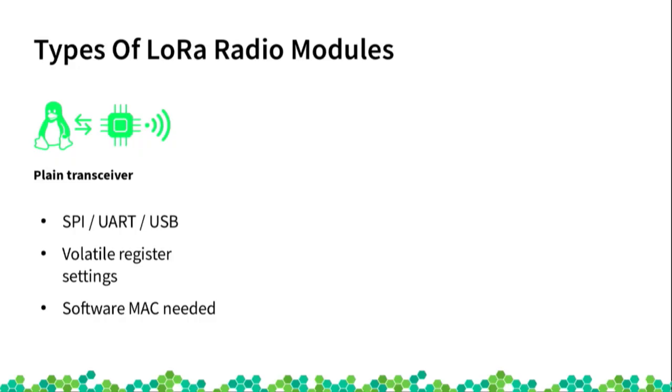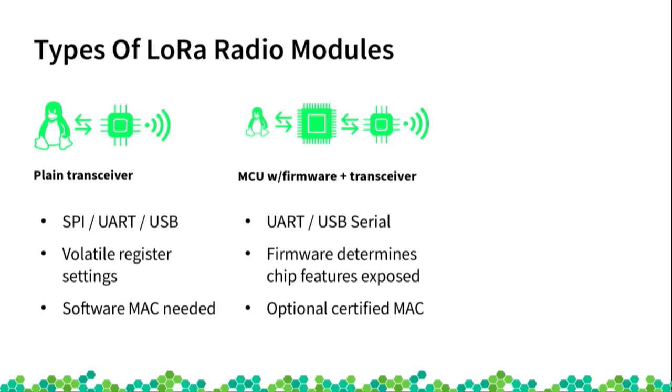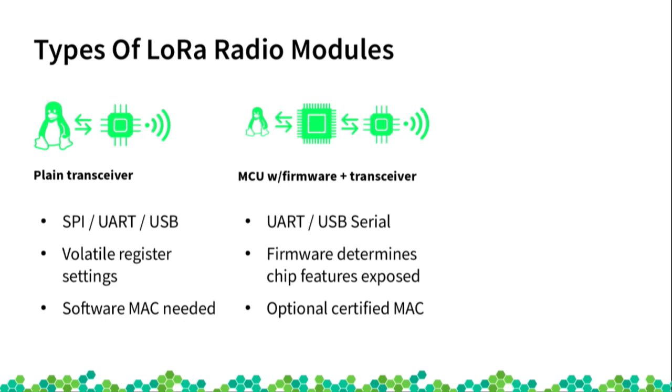These transceivers provide the physical layer of network communication, and in order to have any framing, routing, and particularly LoRaWAN data communication, this needs to be implemented in software — somewhere in Linux itself. There is also a growing number of modules that do not directly expose the raw interface but rather come with their own interface, handling interrupt handling and receive path buffering. The main reason vendors do this is to certify a particular firmware stack that passes certifications from the LoRa Alliance.